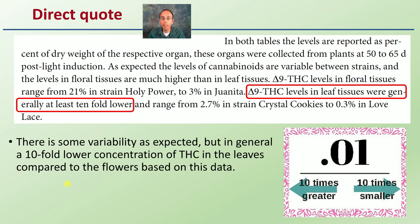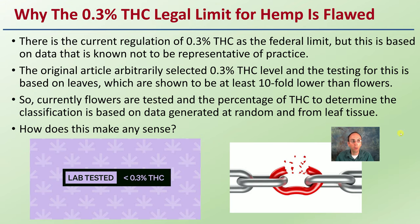Remember, that original article was testing the leaves, not actually the flowers. So looking at why the 0.3% THC legal limit for hemp is flawed — the current regulation of 0.3% THC as the federal limit is based on data known not to be representative of practice. The original article arbitrarily selected that level, and testing was based on the leaves, which are shown to be at least tenfold lower than the flowers. Currently, flowers are tested, and the percentage of THC used to determine classification is based on data generated at random from leaf tissue.